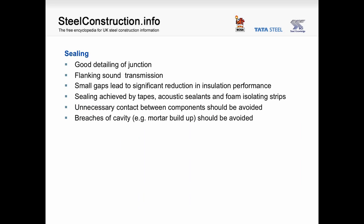Sealing and good junction detailing is important to ensure good performance in a building. The principles of good junction detailing ensure that flanking sound is controlled. Any joints should be sealed with tape or acoustic sealants, and foam isolation strips can be used. Unnecessary contact between components should be avoided, and any breaches of cavities or isolation layers must also be avoided. For example, mortar build-up on wall ties in a cavity wall construction can form a bridge for sound.